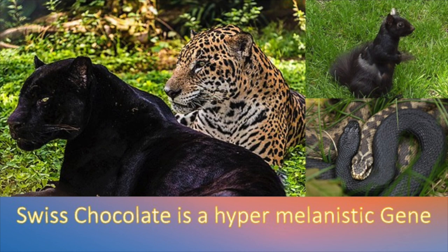Swiss Chocolate is a hypermelanistic gene, which basically means it produces a lot of melanin, giving the phenotype an appearance of a black animal. On the pictures I have up on the screen, on the top right you have a squirrel with a black coat. And then on the bottom you have a couple of adders — one's a normal phenotype, a wild type, and the other one has that hypermelanistic gene inside of it. So it allows it to express very dark pigmentation compared to its normal phenotype.